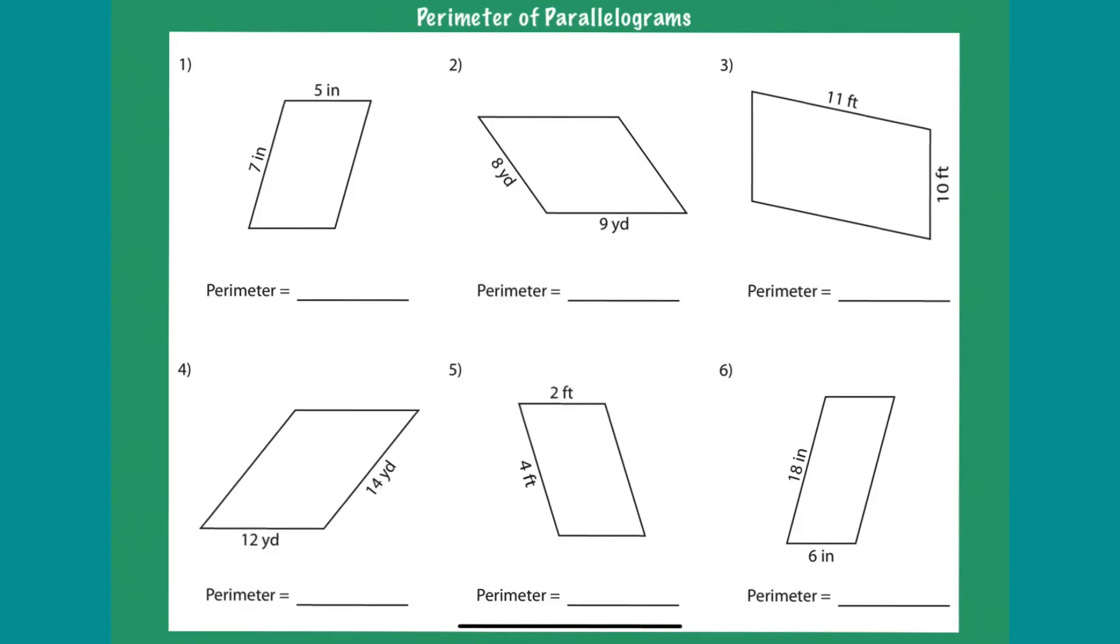So the way we do it is very similar to the way we do rectangles. Okay, so you know we have seven inches here, seven inches here. If this is five, then this is five inches over here. So how do you find the perimeter of this one? You do seven plus seven plus five plus five.